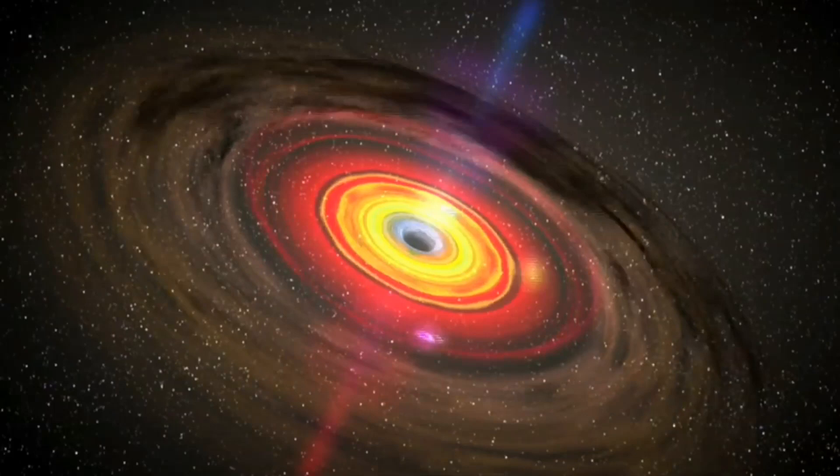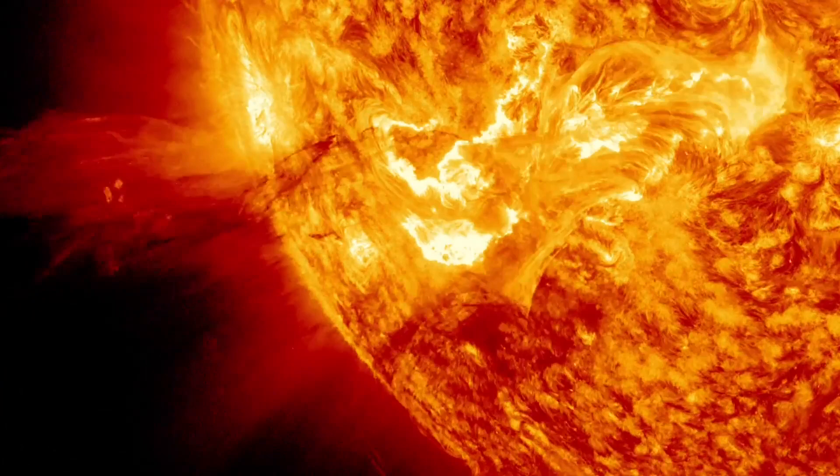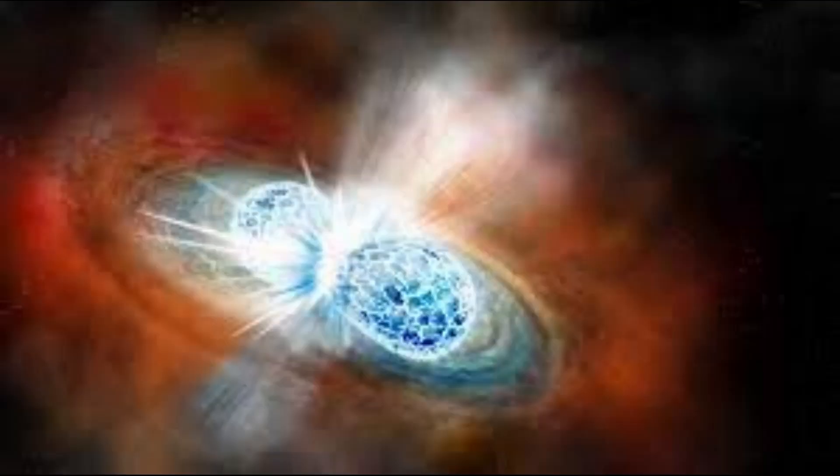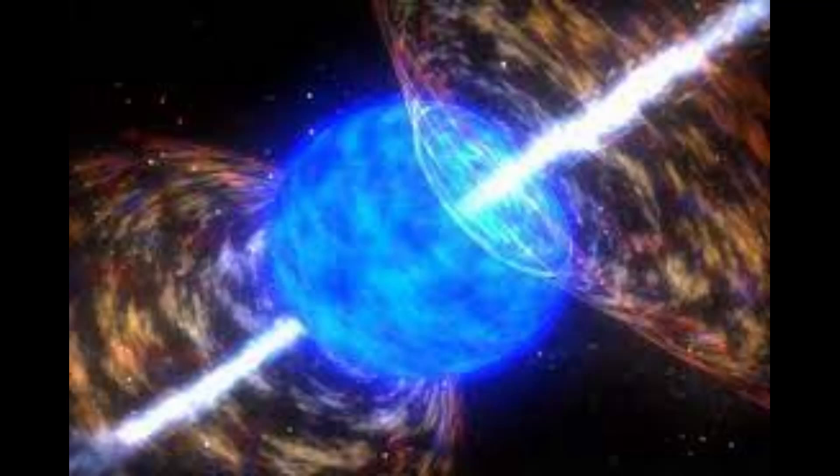Black holes are expected to form when a massive star dies. After the star's nuclear fuel is exhausted, its core collapses to the densest state of matter imaginable, a hundred times denser than an atomic nucleus. That's so dense that protons, neutrons, and electrons are no longer discrete particles.